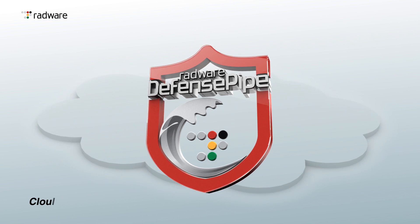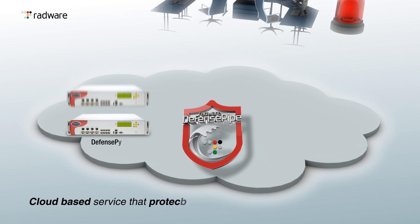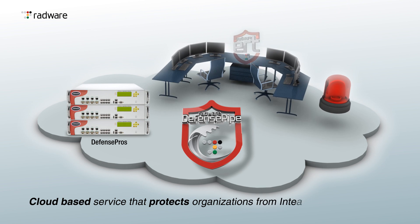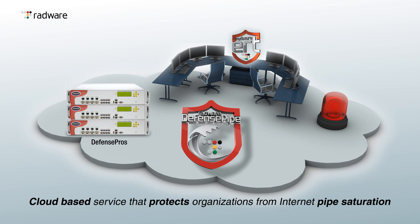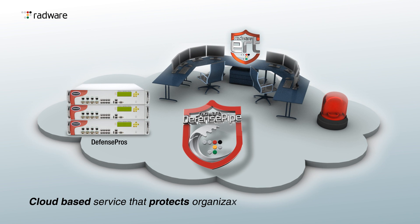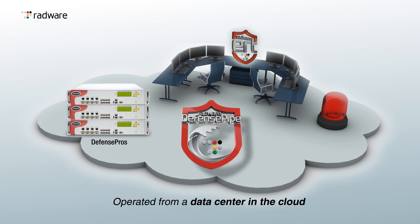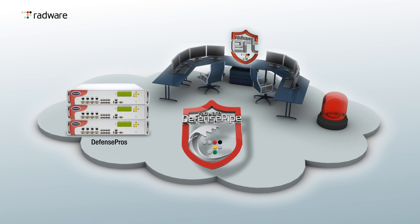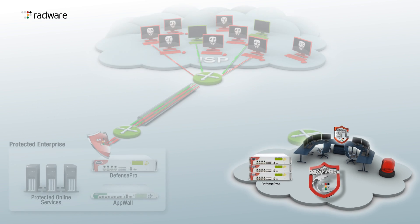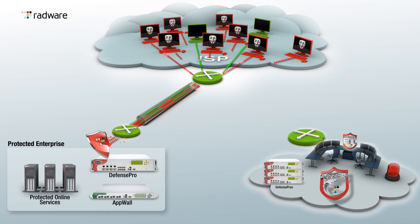Radware's Defense Pipe is a cloud-based service that protects organizations from internet pipe saturation. Defense Pipe is operated from a data center in the cloud and it complements the on-premise Defense Pro capabilities.